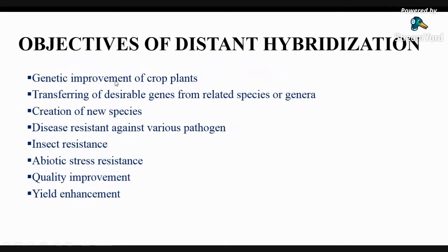These are the different objectives of distant hybridization: genetic improvement of crop plants, transferring of bizarre genes from related species or genera, creation of new species, disease resistance against various pathogens, insect resistance, abiotic stress resistance, quality improvement, and yield enhancement.